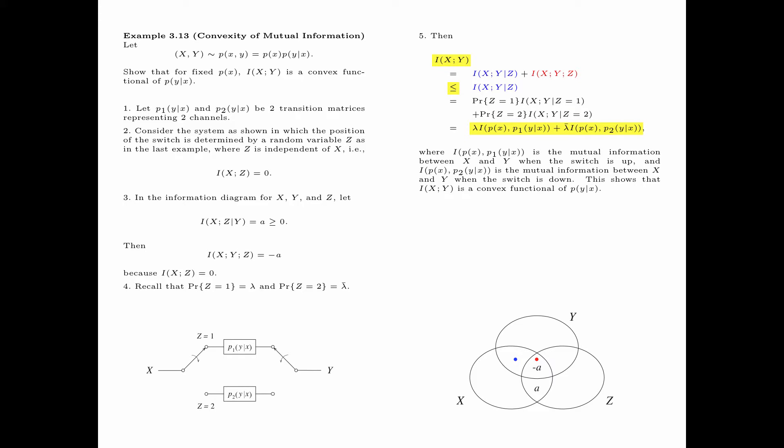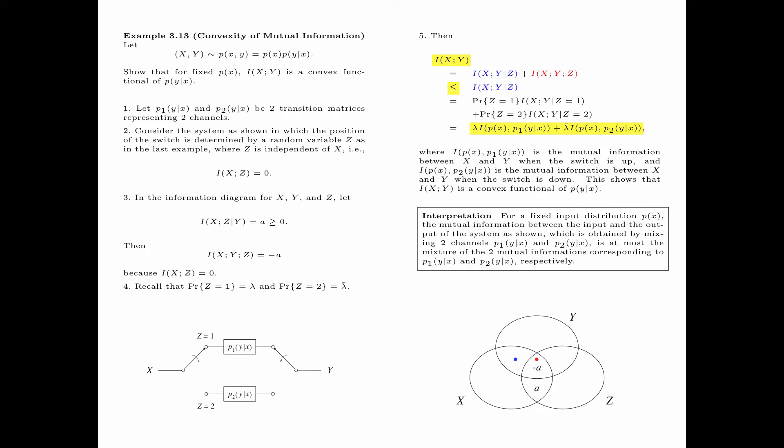Thus, we have shown that I(x;y) is a convex functional of p(y|x). The interpretation is that for a fixed input distribution p(x), the mutual information between the input and output of a system obtained by mixing two channels p1(y|x) and p2(y|x) is at most the mixture of the two mutual informations corresponding to p1(y|x) and p2(y|x) respectively.